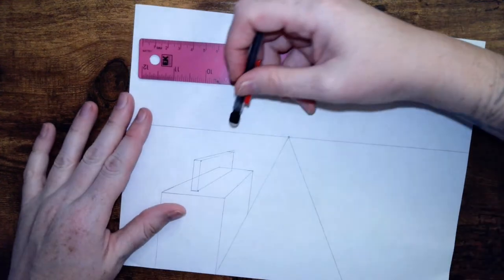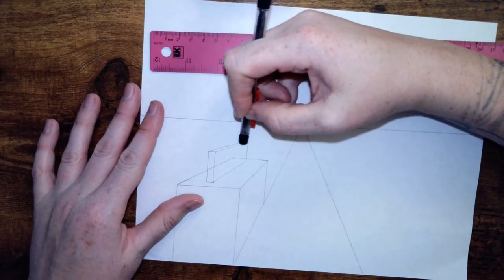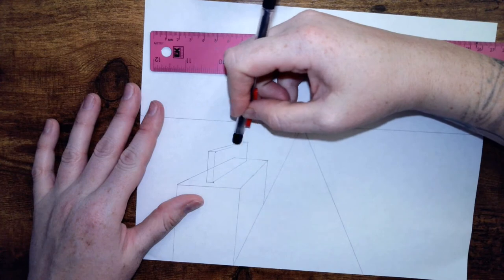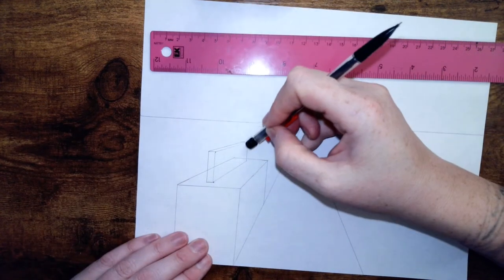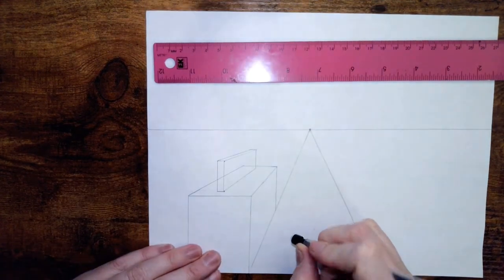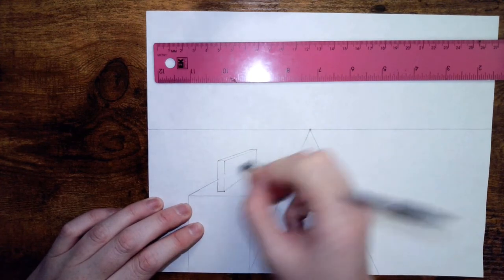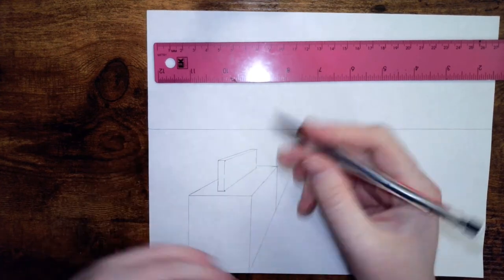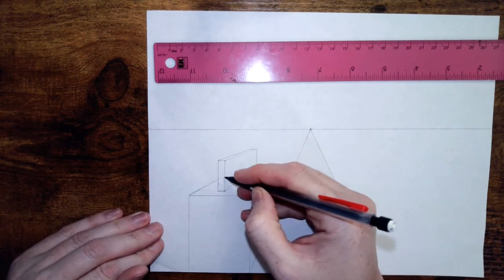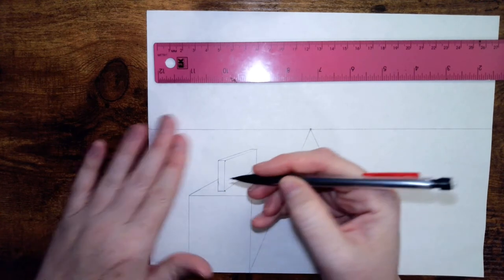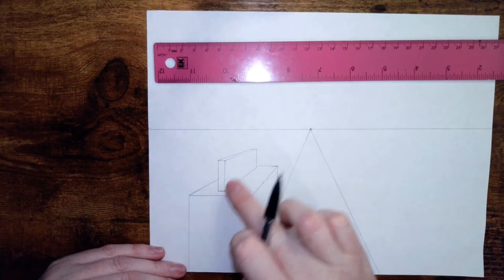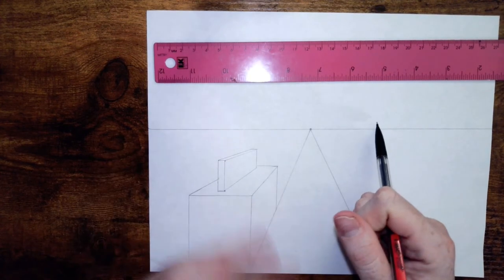From here you can erase the lines you do not need. And this is not a see-through billboard, so we can erase these back lines because they would not show. So essentially it's just another building on top of a building, but this one is really skinny.